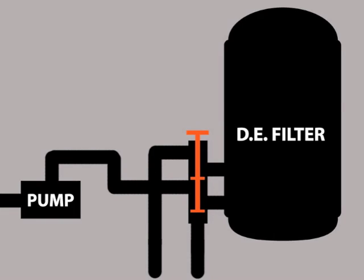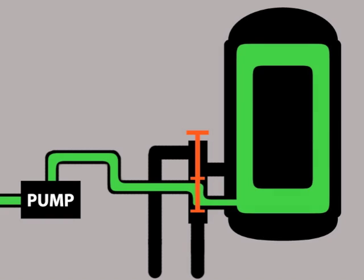This is a diagram of a typical DE filter setup with the DE filter valve in the filter position. The pump moves water from the pool into the DE filter, which is basically a large canister.